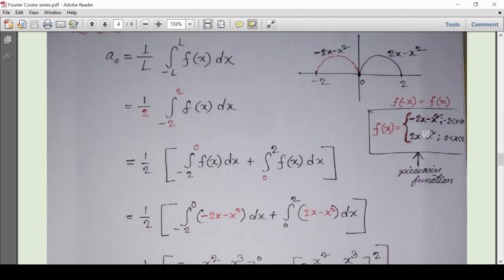This is found from the concept of even function. That means, if we want the reflection of 2x - x² about y-axis on minus 2 to 0, then we have to plug in minus x in the place of x. Because you know that for an even function, the formula is f(-x) = f(x).